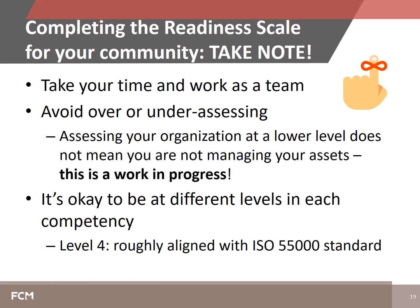There is no need to progress through each competency to the same level. You may be much further along in some competencies than in others, and your organization may also choose to aim for higher levels in some competencies than others. For example, your community may aspire to reach level 3 in data and information, level 4 in planning and decision making, and level 2 in policy and governance. Keep in mind that level 4 of the Asset Management Readiness Scale is roughly aligned with the requirements of the ISO 55,000 standard, which is a significant accomplishment.